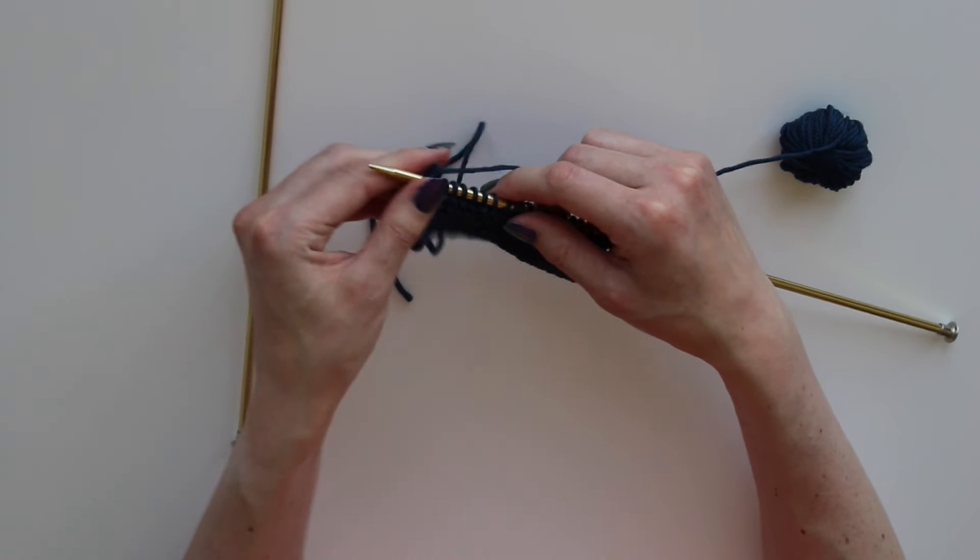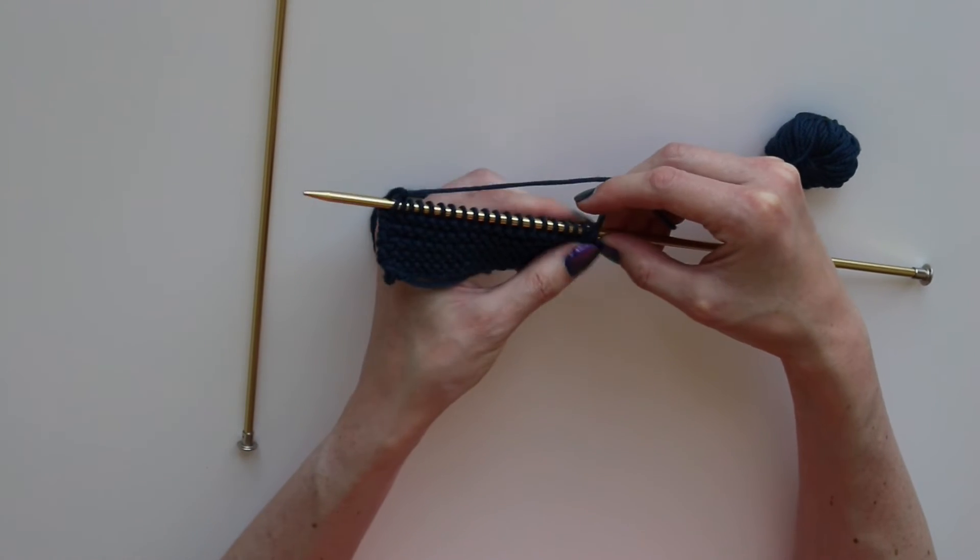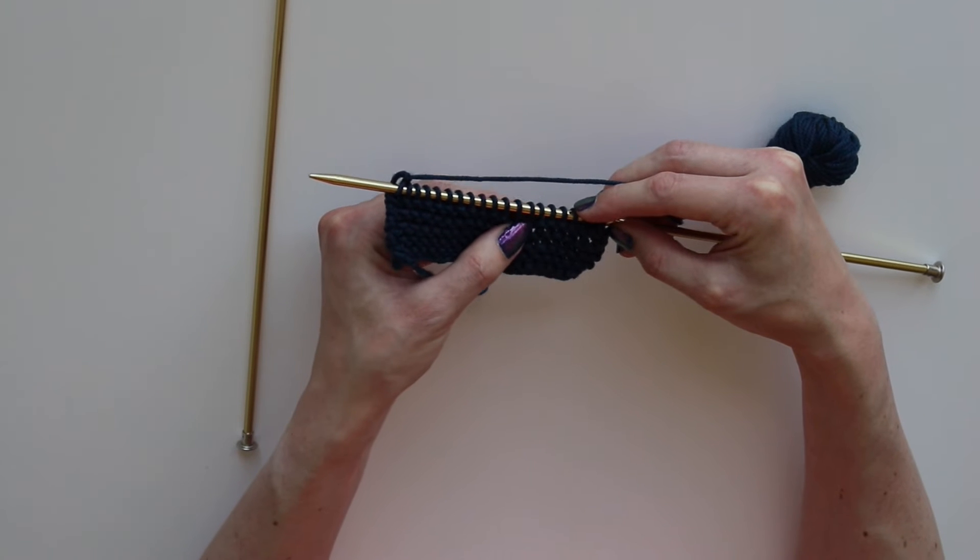When I am finished, you can see that the stitches that I just knit are the flat V shapes of the knit stitch.